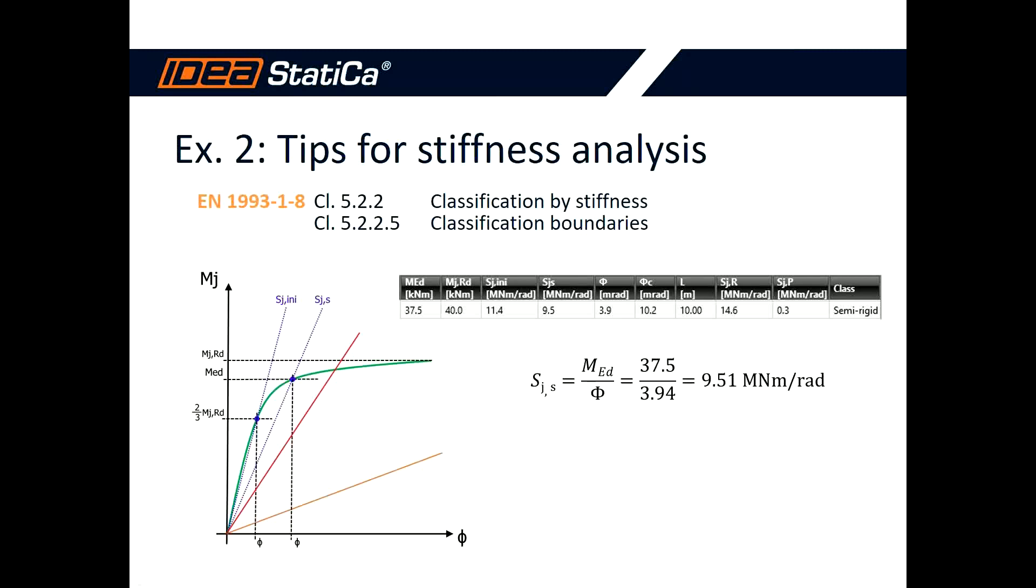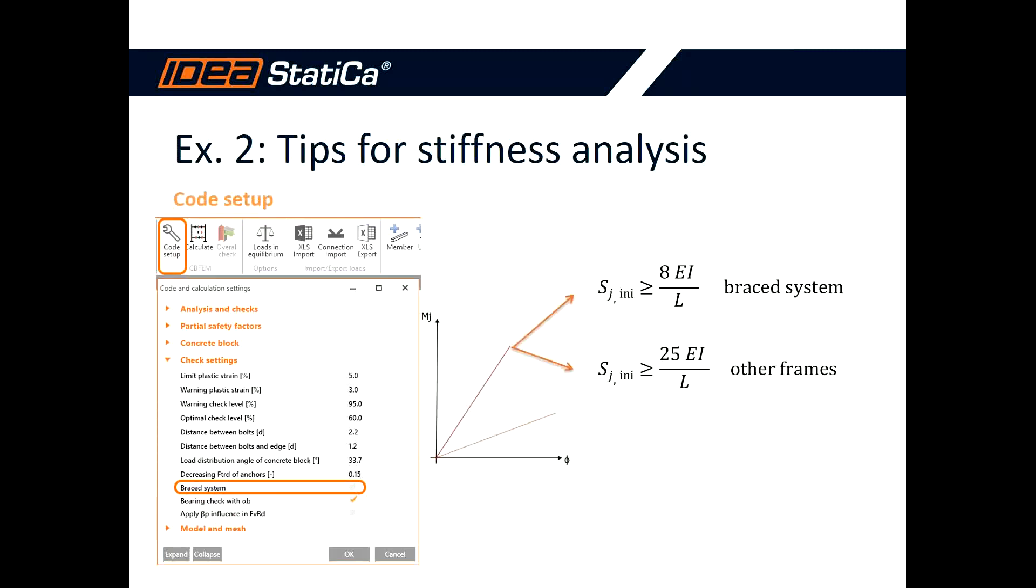For the classification limits, semi-rigid and rigid are two options. For frames where the bracing system reduces the horizontal displacement by at least 80%, this is one option.